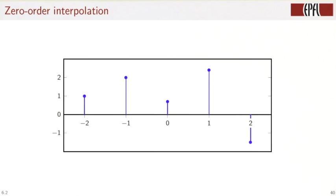The first example is piecewise constant interpolation. Take the sample at the origin, for example, and put the continuous time function at that value between minus a half and plus a half, and around all the samples.